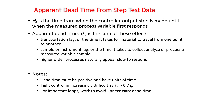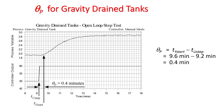For theta_p, the apparent dead time: tight control becomes increasingly difficult as theta_p approaches the value of tau_p. If apparent dead time is nearly as large as the time constant, PID controllers are hard to tune. Using the tangent approach again, starting from where the step occurred to where the apparent dead time ends, in this case theta_p equals 0.4 minutes.